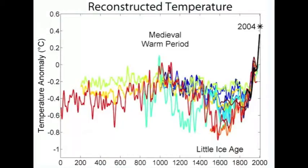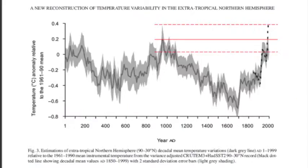Even though we call these events Warm Periods and Ice Ages, the temperature differences between then and today isn't all that big. During the Little Ice Age, temperatures fell approximately one degree Celsius. During the Medieval Warm Period, temperatures rose by only a few tenths of a degree. Today, we are seeing temperatures rise almost as much as one degree Celsius, which is much greater than the Medieval Warm Period.